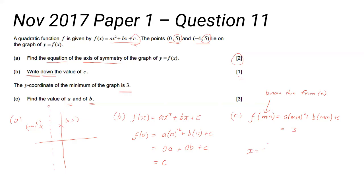We also know that the line of symmetry is - and this is from your formula book - x is minus b upon 2a. You know that as well. So this will give you an equation because you know c, you know that from question b.